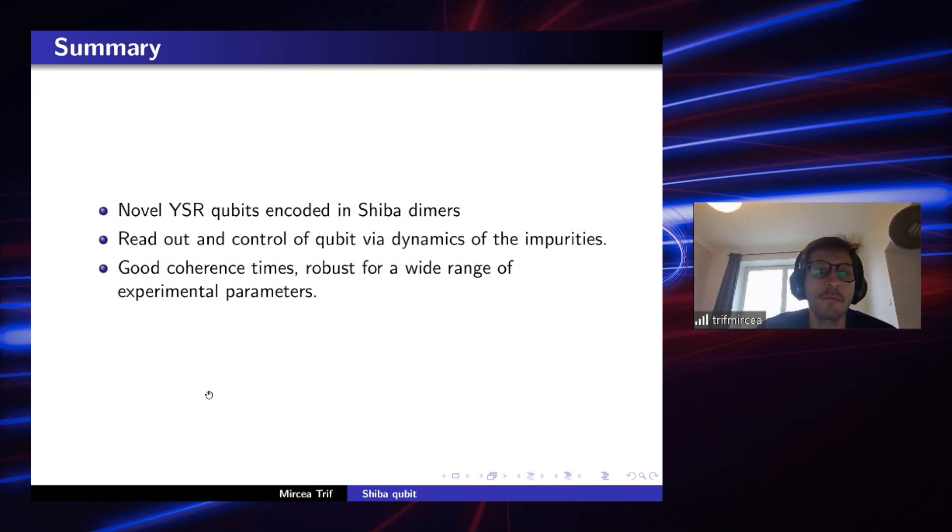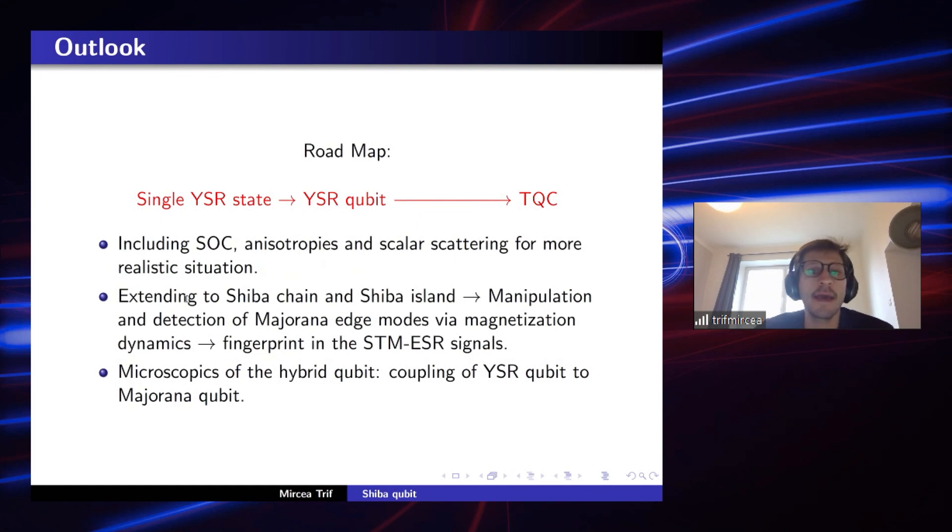So, in summary, we proposed novel YSR qubits encoded in Shiba dimers that host two-level systems, for example, in the odd parity sector. Readout and control of this qubit can be achieved in principle by just igniting and harnessing the dynamics of the magnetic impurities that defines them in the first place. So the coupling is directly strong, so there is no new degree of freedom needed for the entire scheme. The coherence seems to be pretty good, robust for a wide range of experimental parameters and comparable to the Andreev qubit. And that's kind of the roadmap.